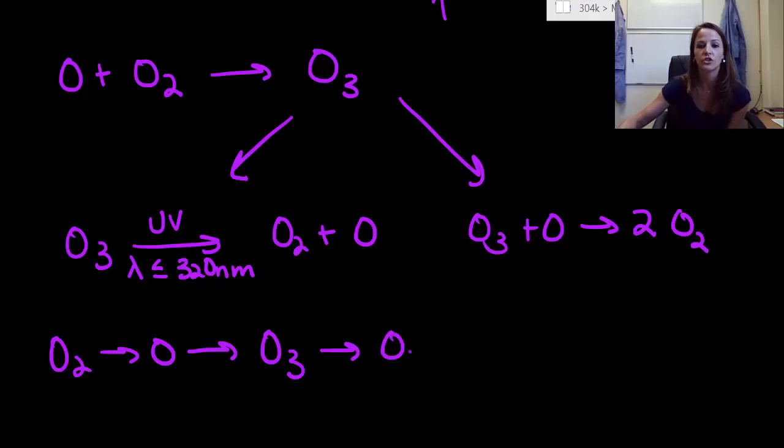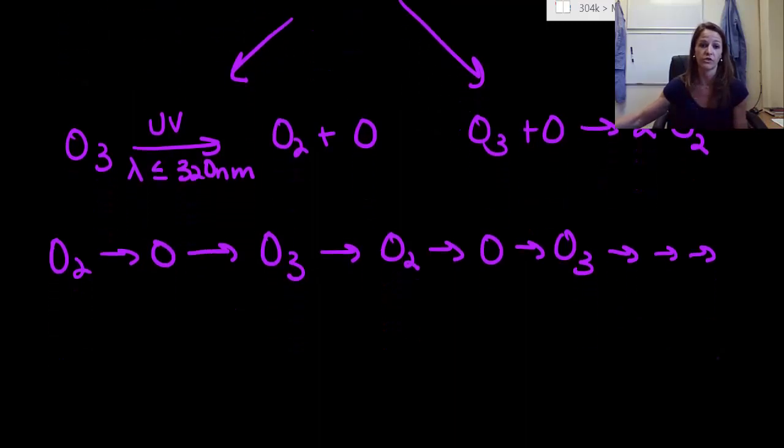Ozone can then decompose to create diatomic oxygen, which then goes to monatomic, which then goes to ozone, and so on and so forth. It continues and continues, so that we always have oxygen and ozone in our stratosphere to protect us against harmful UV radiation.